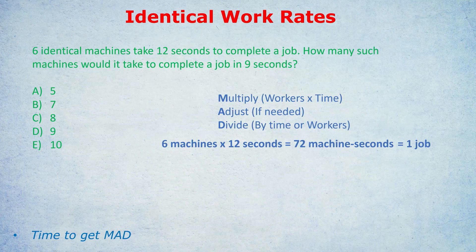Step two is adjust, if needed. When I say adjust, I'm talking exclusively about the job we're doing. In the first sentence we're talking about one job; in the second sentence we may be talking about two jobs, half a job, or four jobs — it depends on the question. In this case, there's no need to adjust because both sentences reference one job. So no need to adjust — sometimes this step is not needed, that's why I wrote 'if needed.'